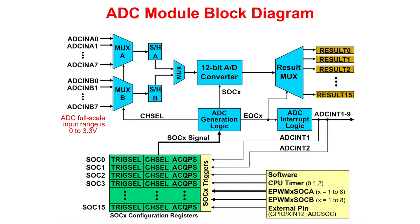The ADC module is based around a 12-bit converter. There are 16 input channels and 16 result registers. The SOC configuration registers select the trigger source, channel to convert, and the acquisition pre-scale window size. The triggers include software, CPU timers 0, 1 and 2, EPWM A and B 1-8, and an external pin.